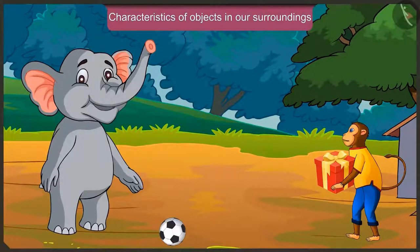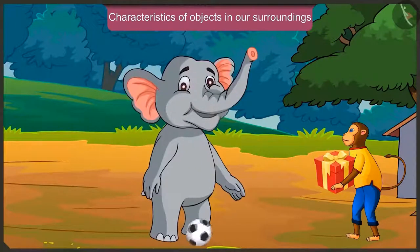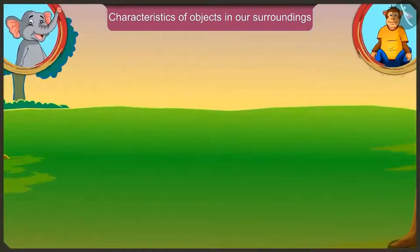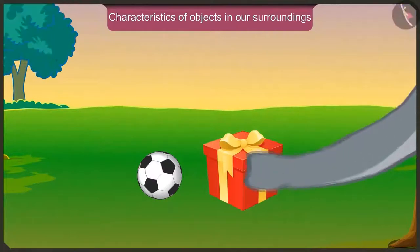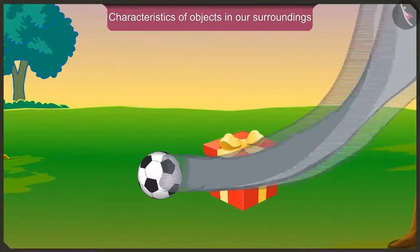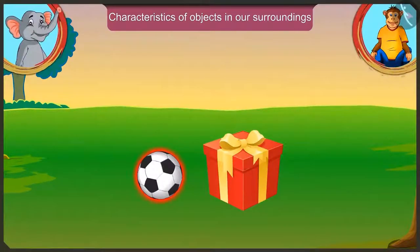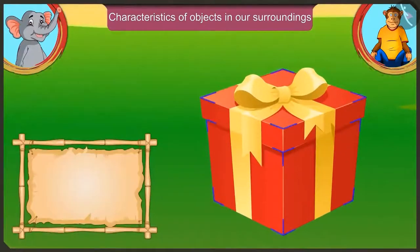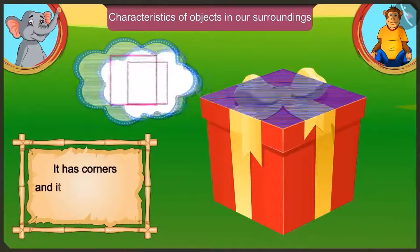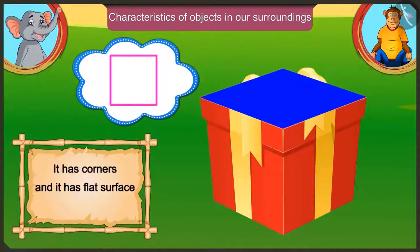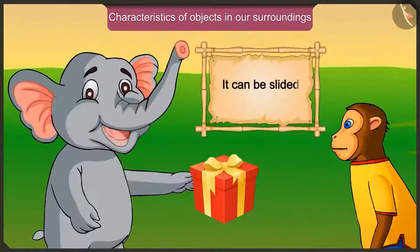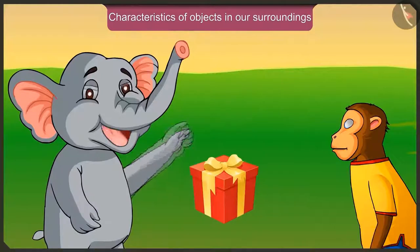Appu, how is it possible that I roll my box just like your ball? Look at this - this is your ball and this is my box. Just touch it and see. Is it in the shape of your ball? No, this is not round like my ball. It has sharp corners on all the sides. Because it has a flat surface, it can be slid and moved, but it is not possible to roll it.